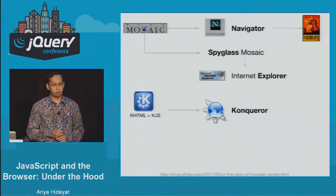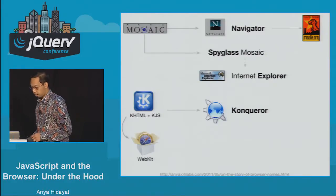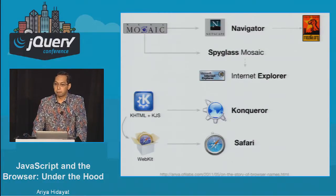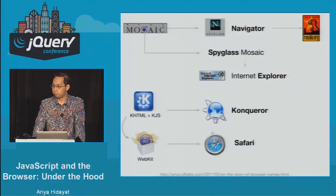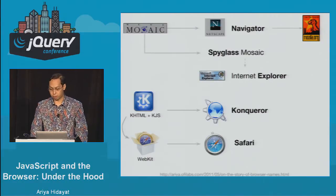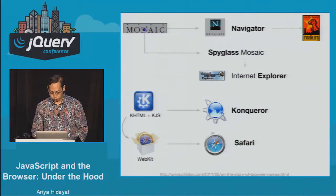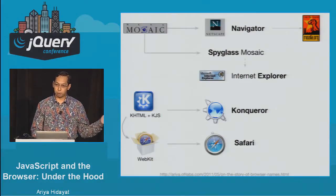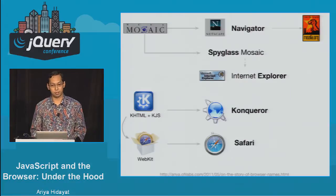KHTML and KJS were adopted by Apple for their rendering engine — everyone knows WebKit. WebKit went on to power Safari, which runs on many desktop and mobile environments. Little did we know that KDE technologies would end up powering millions of browsers through our smartphones. In fact, if you look at the Safari WebKit source code, when Apple took KHTML internally, the branch itself was named 'Alexander' — after Alexander the Great conqueror.